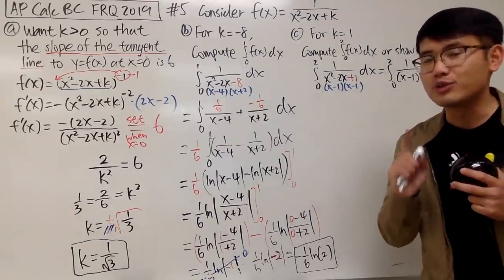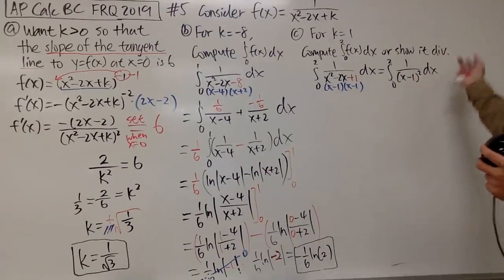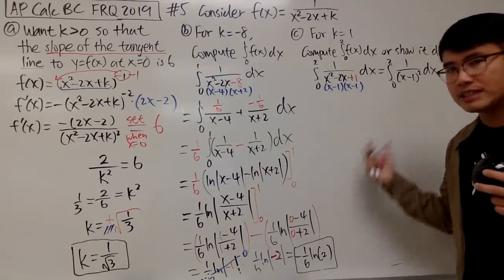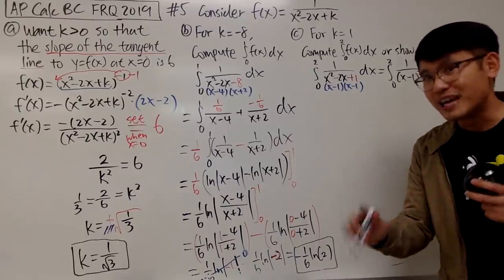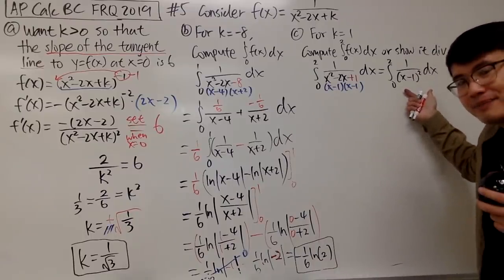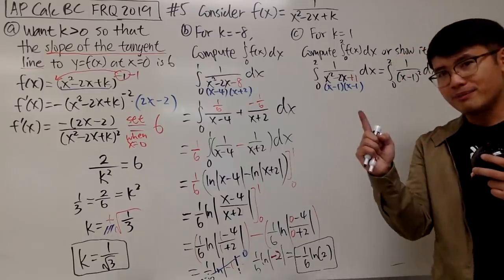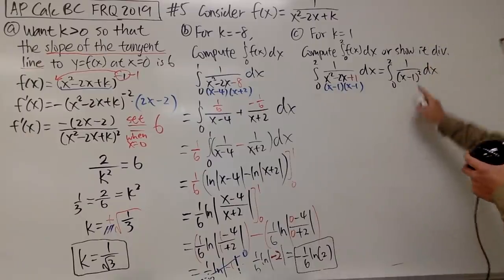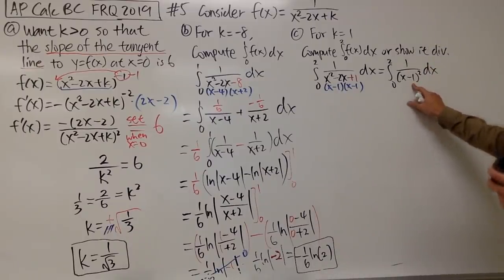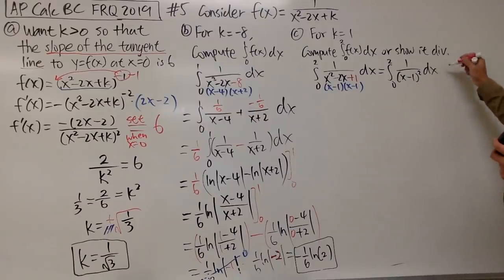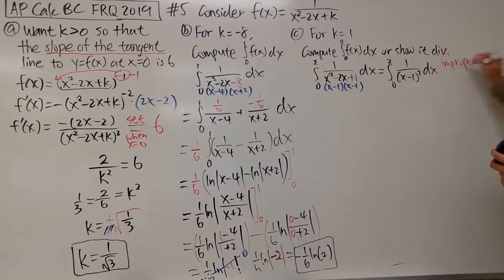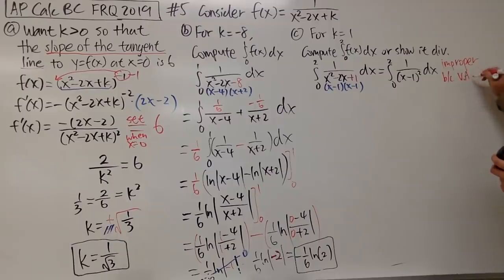You have to do this one super carefully. Do not just find an antiderivative, plug in 2, plug in 0, and subtract — don't do that. Because this is in fact an improper integral. When we go from 0 to 2, x equals 1 is in between, and when x is 1, we have 1 minus 1 equals 0 in the denominator — that's no good. We have a vertical asymptote at x equals 1, which makes this an improper integral.